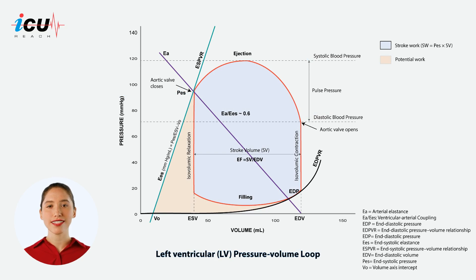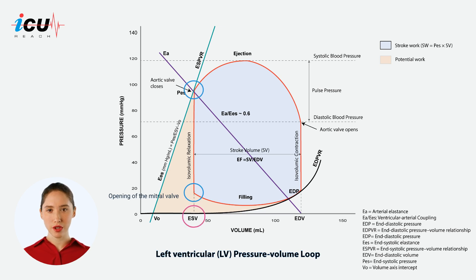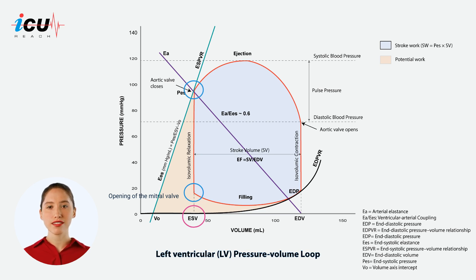The next phase, isovolumetric relaxation, begins with the closure of the aortic valve and ends with the opening of the mitral valve. During this phase, the volume of the ventricle remains constant at end systolic volume. The ventricle relaxes, causing the pressure to drop sharply.